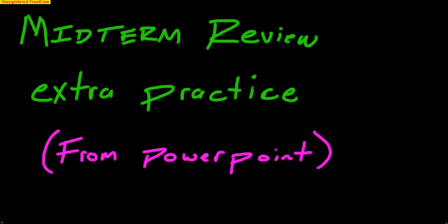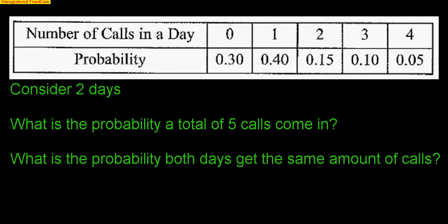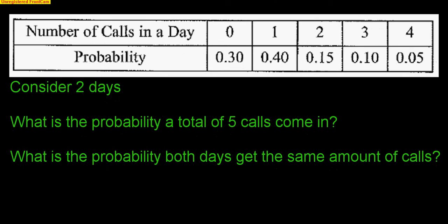All right, we have another midterm review video here with a couple extra practice problems. These problems were in your PowerPoint towards the end, so you should recognize these problems from there as well. So police department gets, on any given day, 0, 1, 2, 3, or 4 calls. In a small town police department, here's the probabilities of those calls on each day. So consider two days. Keep in mind here that we are considering two days, so we are going to be multiplying here because we've got to think about day one and then day two.